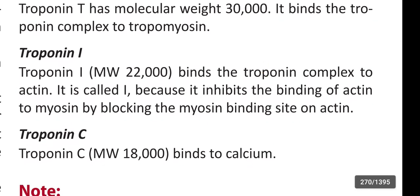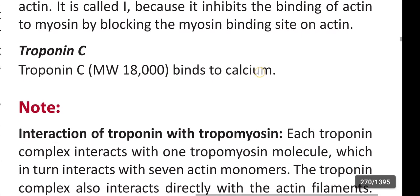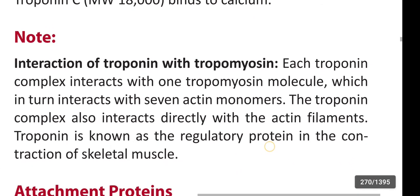Troponin I has a molecular weight of 22,000 and binds the troponin complex to actin. It is called 'I' because it inhibits the binding of actin to myosin by blocking the myosin binding site on actin. Troponin C has a molecular weight of 18,000 and binds to calcium.